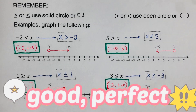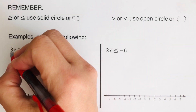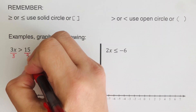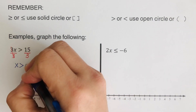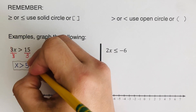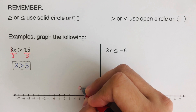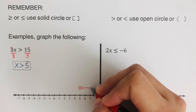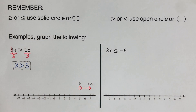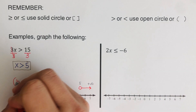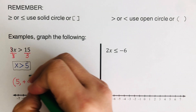Now we need to solve for x. For 3x > 15, we divide both sides by 3, which gives x > 5. We graph an open circle on 5 with the arrowhead directed to the right. The solution goes from 5 all the way to positive infinity. In interval notation, we use a parenthesis since it's an open circle, giving (5, +∞).